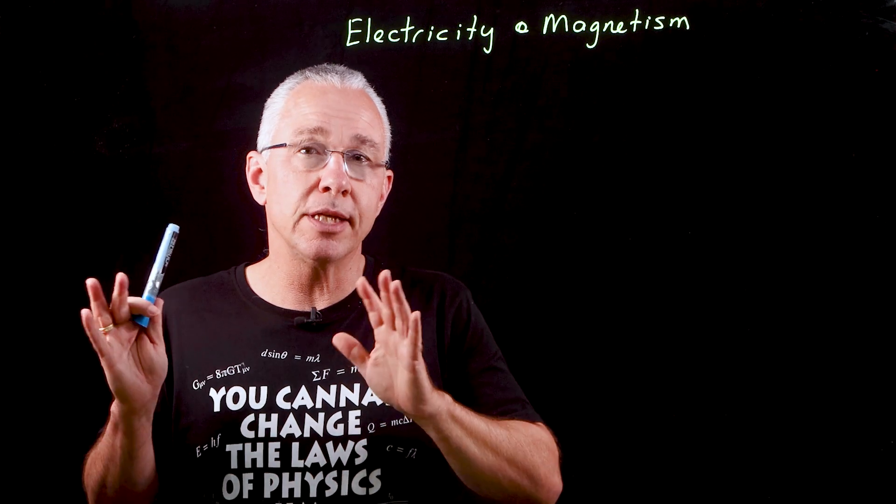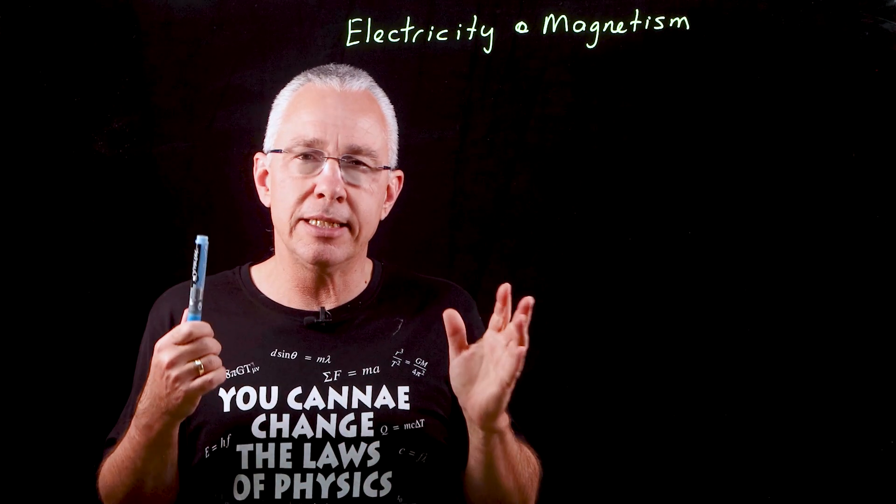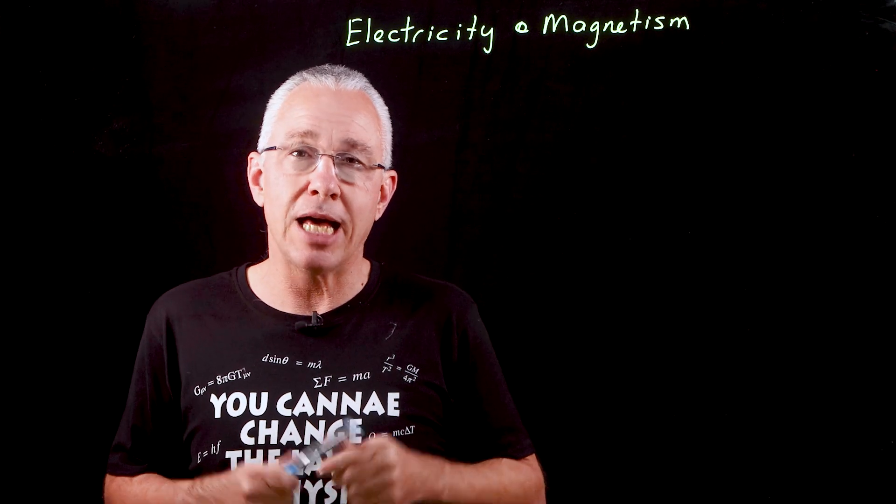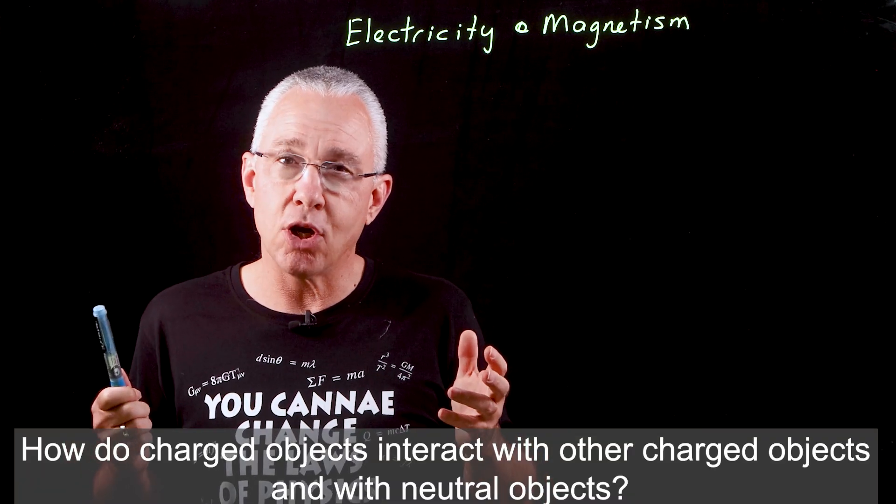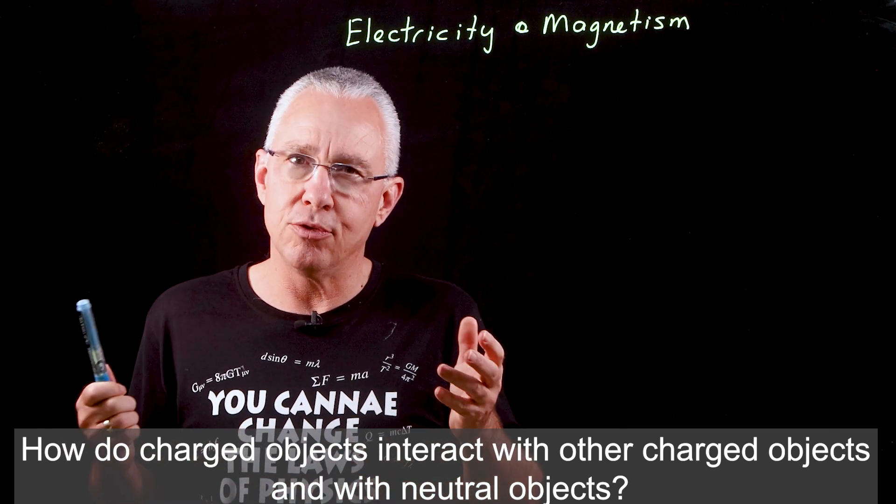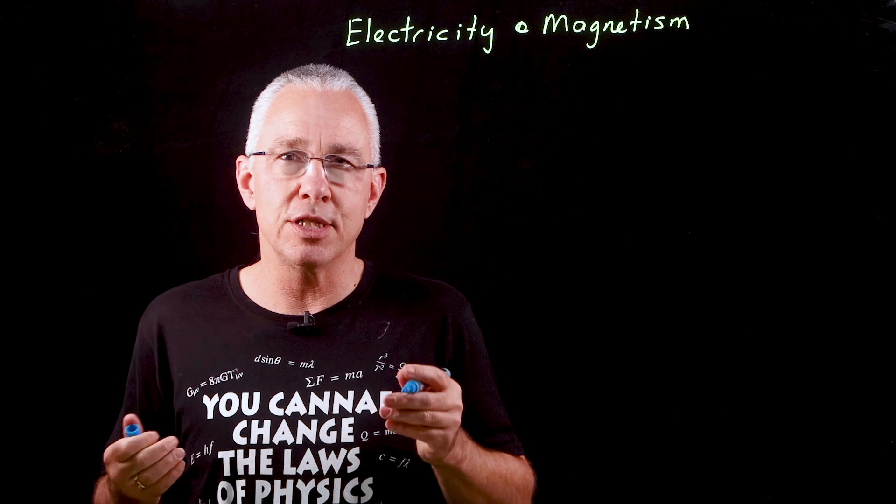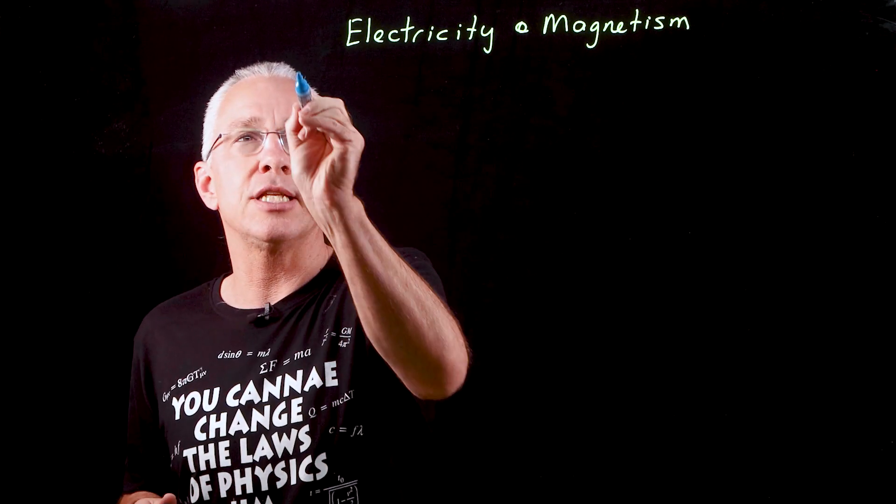The first two deal with the idea of electricity and the last one deals with magnetism. The first inquiry question asks, how do charged objects interact with other charged objects and neutral objects? This is often referred to as the concept of electrostatics.